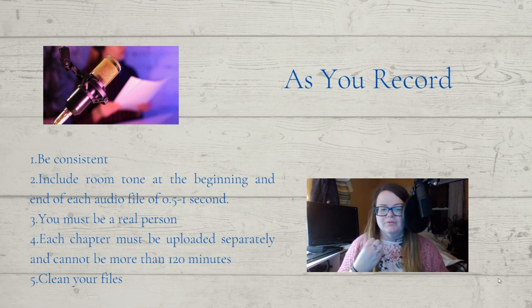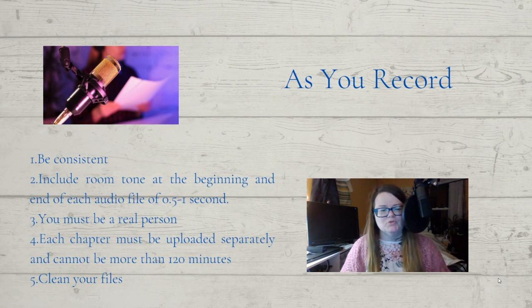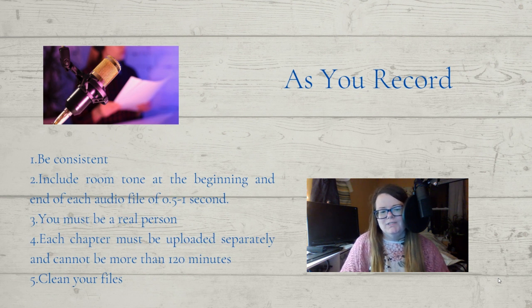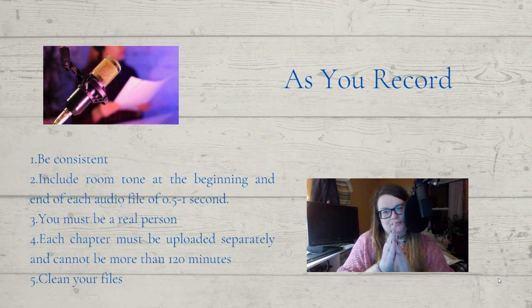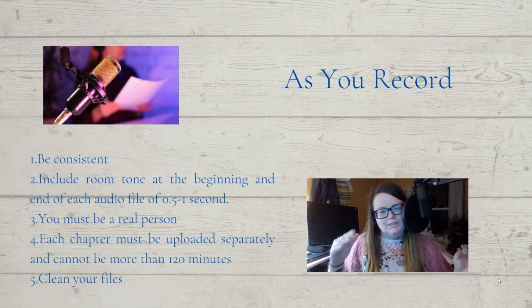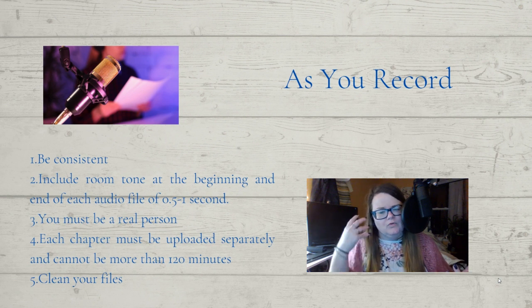Number three, which is incredibly important: you must be a real person. Audible does not take any speech-to-text voice recordings, no computerized voices, no AI — you have to be an actual real person reading the script. Each chapter must be uploaded separately and cannot be more than 120 minutes. There's no minimum and no maximum for your full book, but you're going to upload all your chapters, prologues, and credits each as a separate audio file, none of which can be over 120 minutes. You also have to clean your files so you have no popping noises, no little explosions of sound, no odd noises that are going to jar the listener.